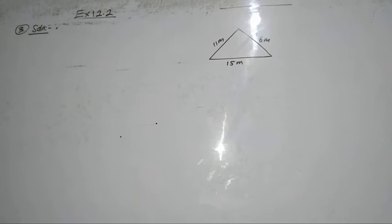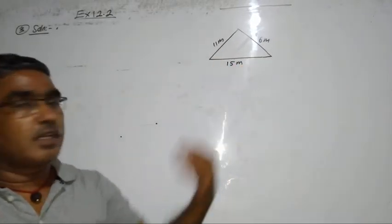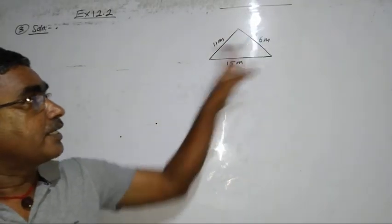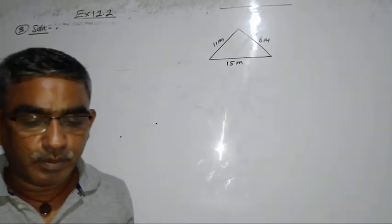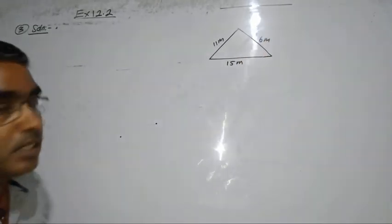I hope you understand the question. The sides of the walls are given, how much area is painted in color? The side is given 11, 15 and 6 meter.